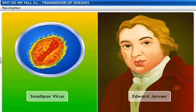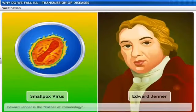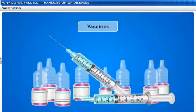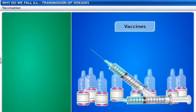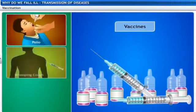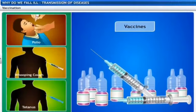Edward Jenner was the first one to do this and he was given many prizes for it. Therefore he is said to be the father of immunology for his great contribution. The same concept of vaccination we are facing nowadays for the coronavirus. Vaccination for viruses is far more difficult than for bacteria, and we have found vaccines for various diseases like polio, whooping cough, and tetanus.